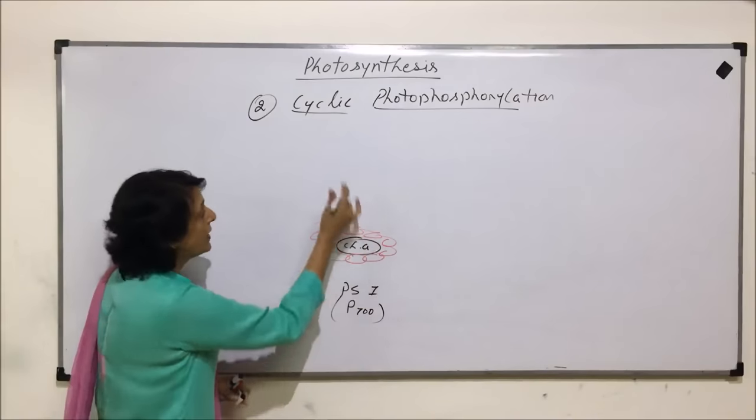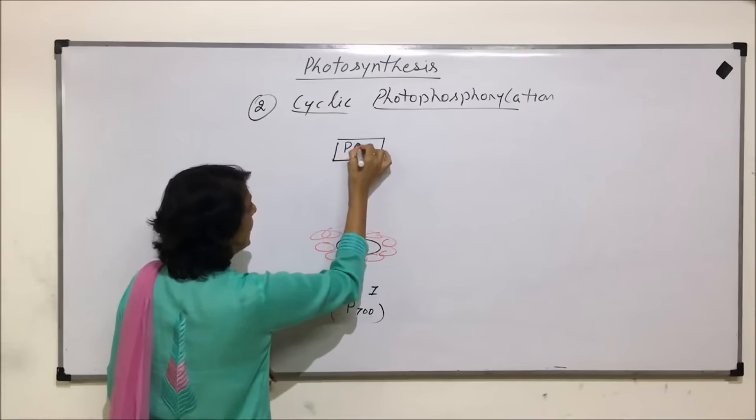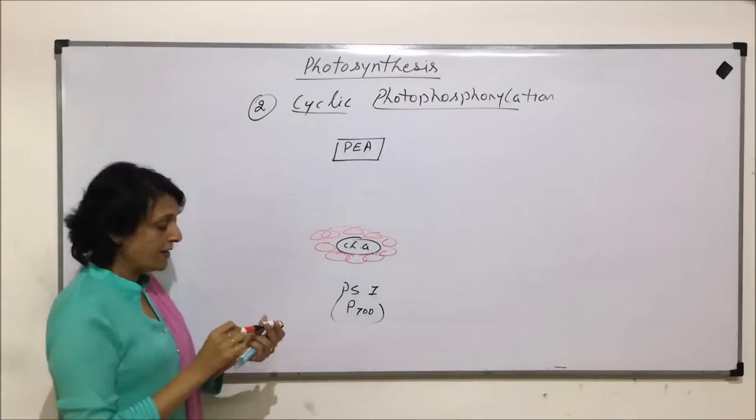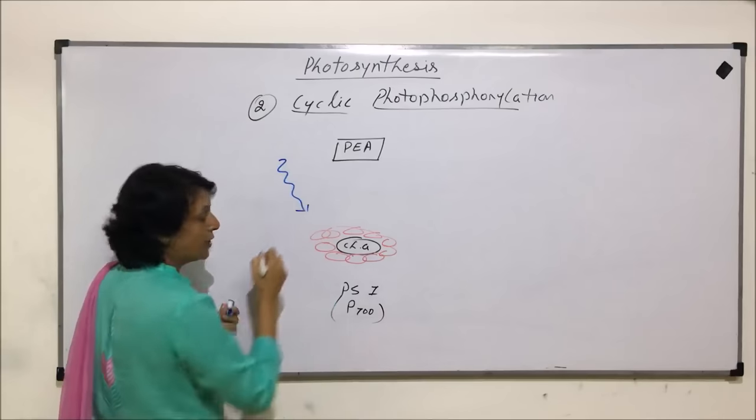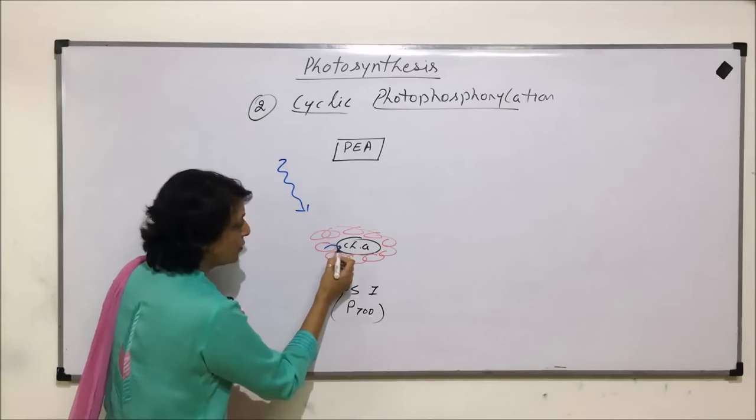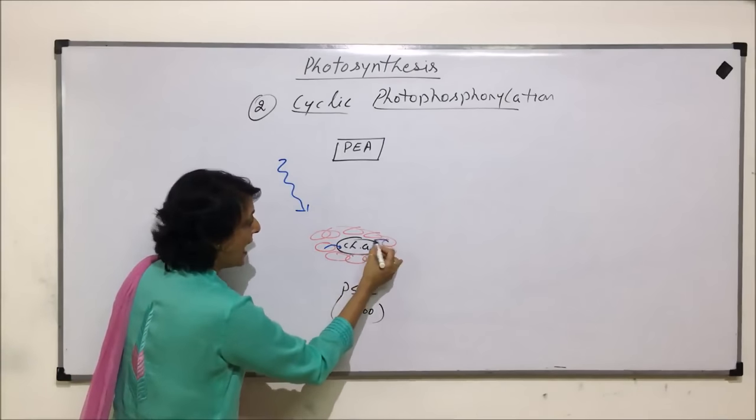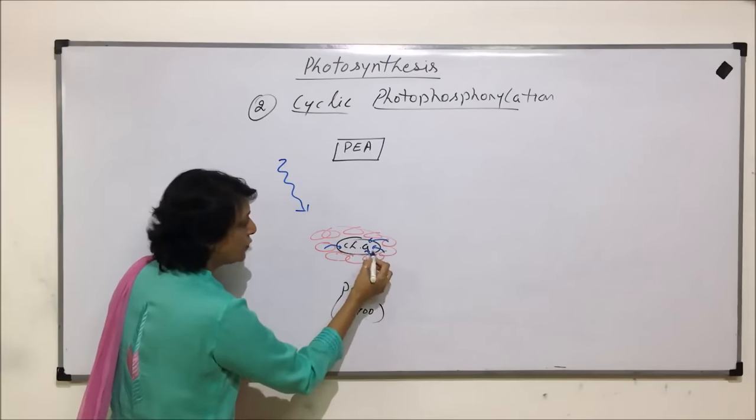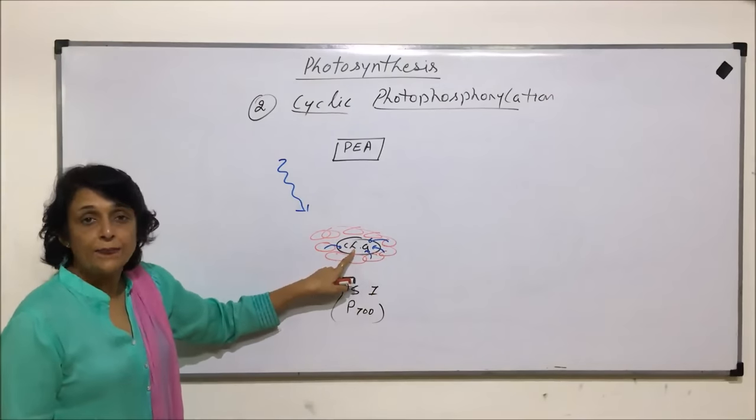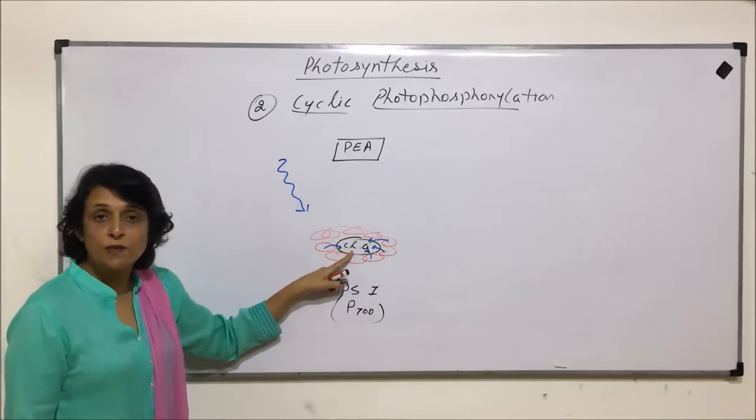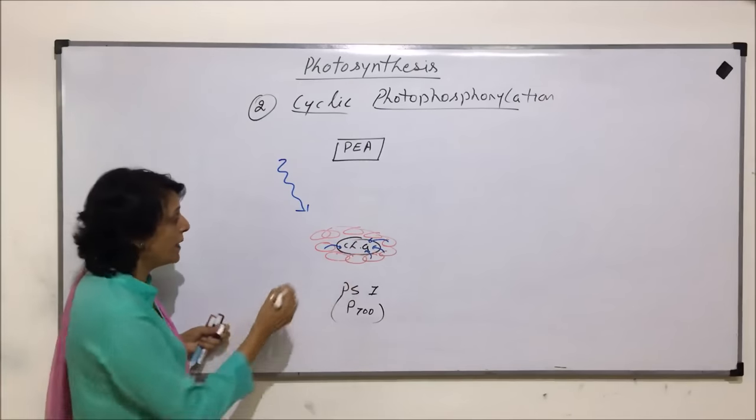This PS1 has its primary electron acceptor. Now, when sunlight falls on these chlorophyll molecules, same thing, all pigments are going to absorb photons of corresponding wavelengths and they pass these photons to the main chlorophyll.